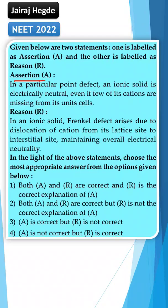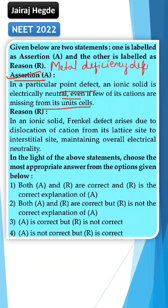This is a typical assertion and reason kind of question. The assertion says that at a particular point defect, an ionic solid is electrically neutral even if few cations are missing from its unit cell. This is true because it is a typical metal deficiency defect. In metal deficiency defect, few higher valent cations will be present, which is why there will be some metal deficiency in the crystal.